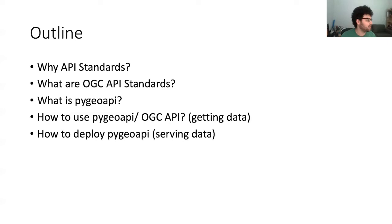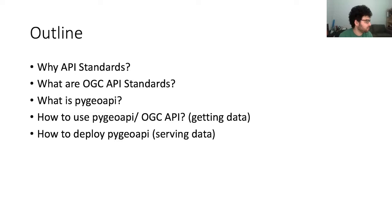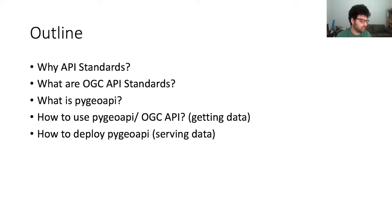I'm going to take us on a little tour of this cool new tool, PyGeoAPI, which we at the Internet of Water already make substantial use of. I'll talk first briefly about why API standards — why should you care about them — and then I'll introduce the OGC API family of standards, talk about what PyGeoAPI is, and have a brief walkthrough of how to use PyGeoAPI from the client side.